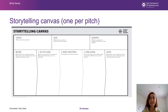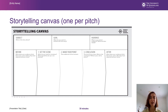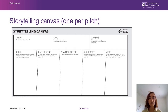What you can see here is an 8-block canvas. We always start with the 3 at the top, so you always have to think about what's your subject — what are you talking about, either your business idea or your project — what's the goal, which is what you want to achieve with your story, and who is your audience.